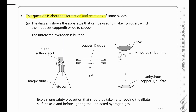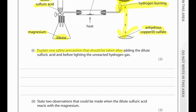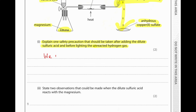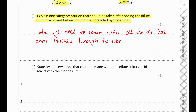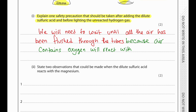This question is about the formation and reactions of some oxides. Hydrogen is produced from dilute sulfuric acid reacting with magnesium bits, then reduces copper oxide to copper. The safety precaution: wait until all the air has been flushed through the system before lighting the unreacted hydrogen, to prevent a possible explosion, since hydrogen and oxygen together can explode inside the reaction vessel.